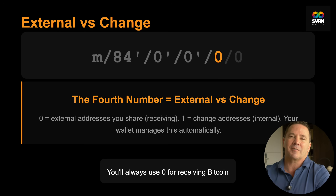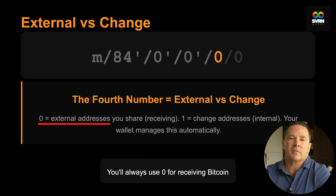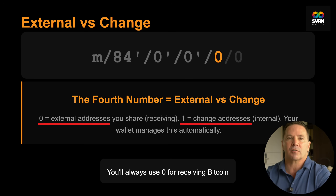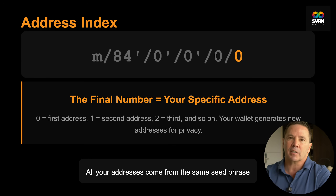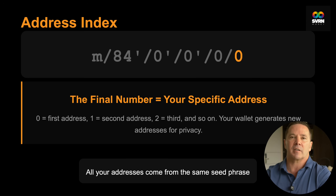The fourth number determines if it's an external address that you share with others — a public address where you say 'send Bitcoin here' — or an internal change address. Zero means an external address; one means an internal change address, and your wallet handles these automatically. The final number is your specific address index. Zero is your first address, one is the second, two is the third. Your wallet automatically generates new addresses for privacy purposes, but they all come from the same seed phrase.